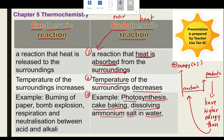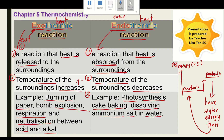To summarize exothermic reactions: 'thermic' means heat, 'exo' means exit — heat is released. Number 1: heat is released to the surrounding, so the temperature of the surrounding increases. Examples include burning paper, bulb explosion, respiration, and neutralization between acid and alkali. On the energy level diagram, the reactants have higher energy, and the product has less energy than the reactants.